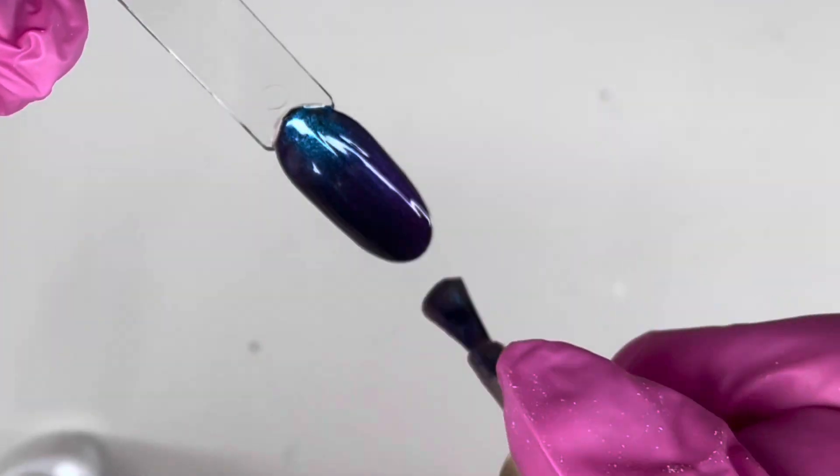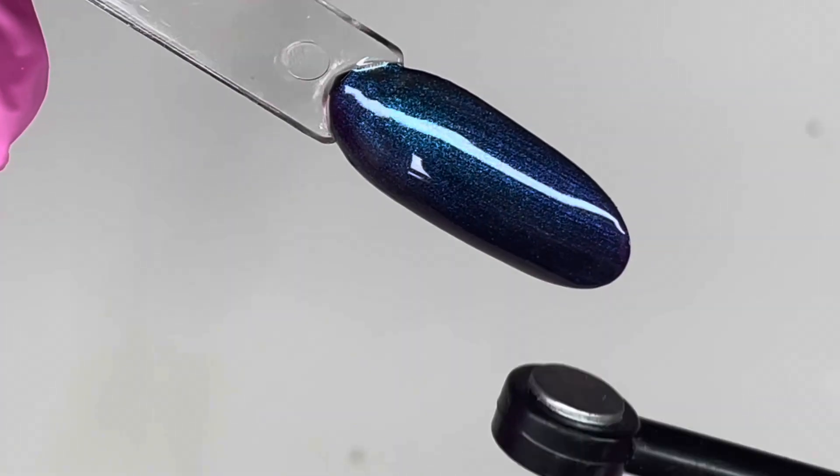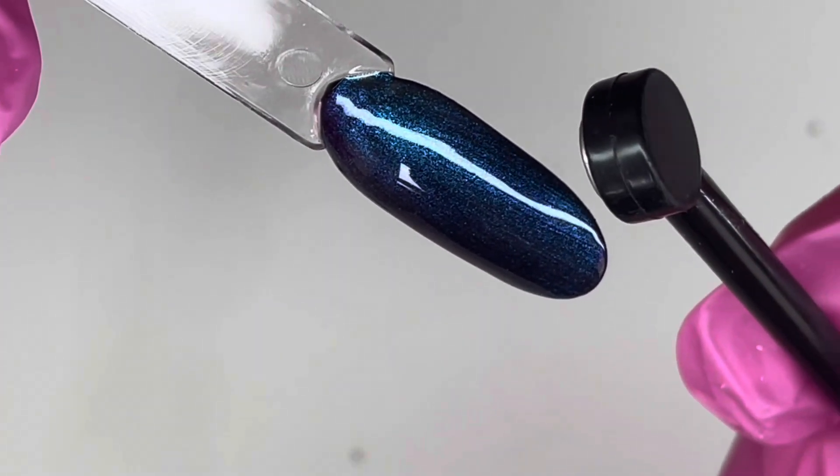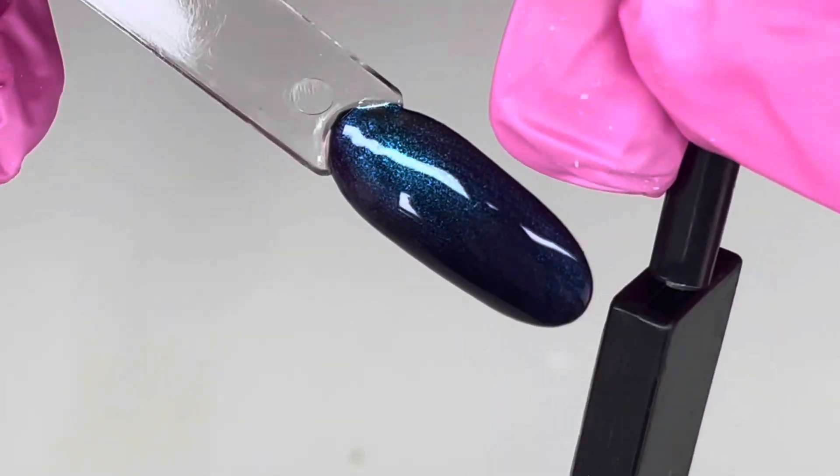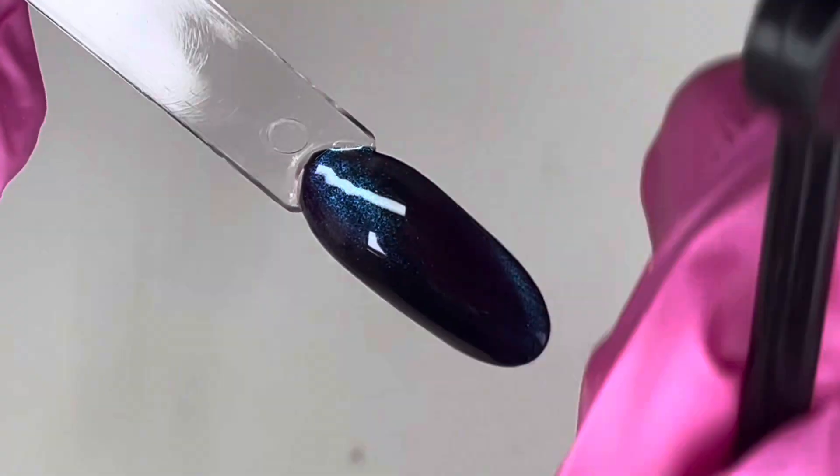These magnetic gels are absolutely stunning. They give off like a chameleon effect, so this one has got like a blue and a purple tone to it. You can literally see both colors in there.